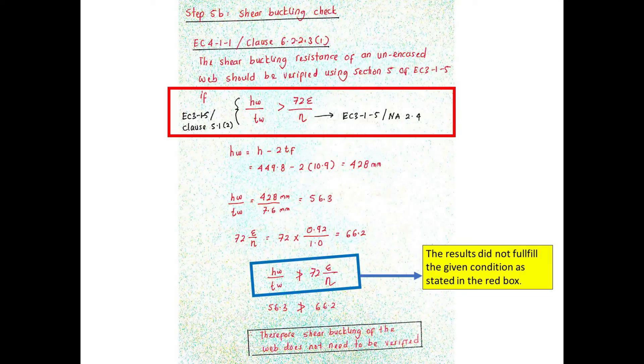Okay, let's carry out the first check, that is shear buckling check. The shear buckling resistance of a new and encased web should be verified using section 5 of EC3 part 1-5, if only the equation in the red box is satisfied.